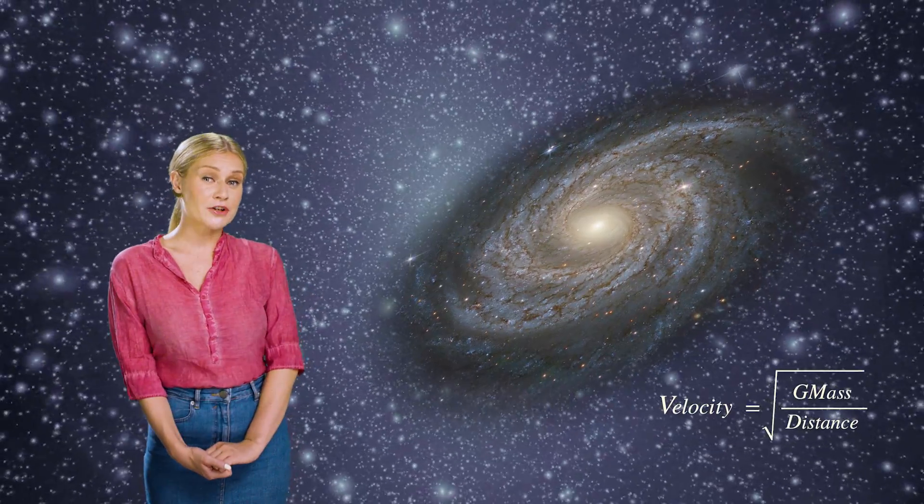Dark matter on the other hand is something we can't see, but one piece of evidence that it does exist is from its gravitational influence on visible matter. If we look at a spiral galaxy, we can estimate how fast it should rotate based on how much matter it contains.